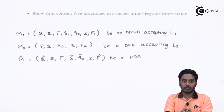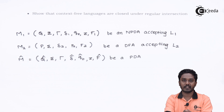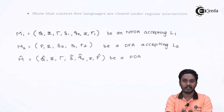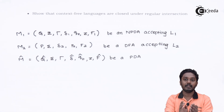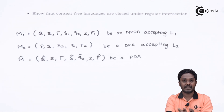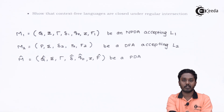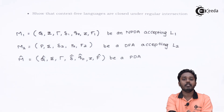Having defined M1 and M2, we have to express M-cap in terms of M1 and M2. If M-cap accepts any string that causes a final state in both M1 and M2, we achieve a machine that recognizes strings in the intersection of L1 and L2. That means we have designed an NPDA which accepts the intersection of a regular language and a context-free language, and hence that intersection is in fact context-free.